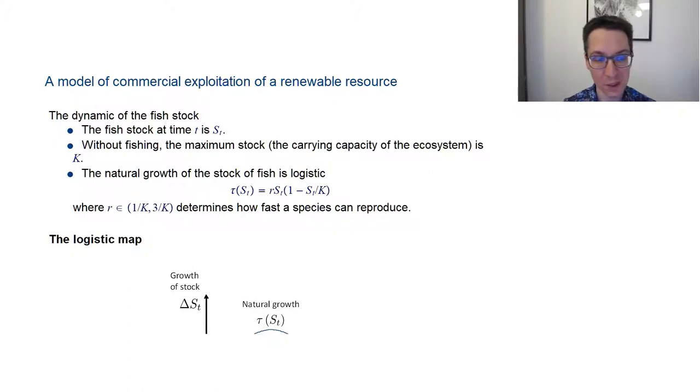The dynamic of the fish stock is described in discrete time. We could perfectly well do it in continuous time as well. At time t, the stock of fish is going to be capital S index t. That's the total number of fish in the ocean, or fish that we care about fishing. Of course, if we let that population of fish grow forever, or if humans weren't around, then they wouldn't grow infinitely.